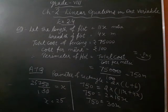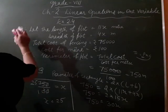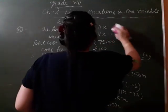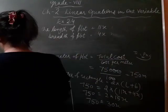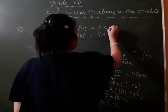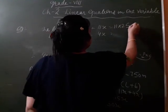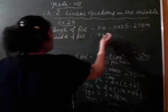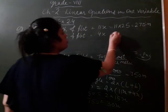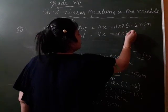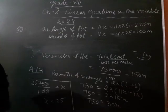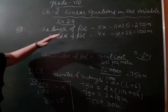Now our length becomes 11 into 25. So, the length of plot is 11x given, 11 into 25, that is 275 meter. And breadth is 4x, that is 4 into 25, 25 fours, that is 100 meter. So, in this way we find its dimensions.